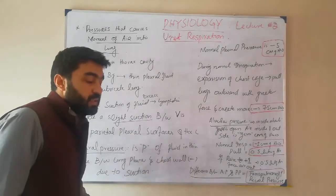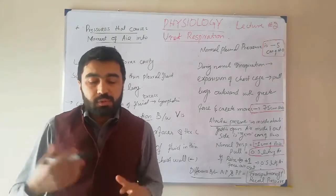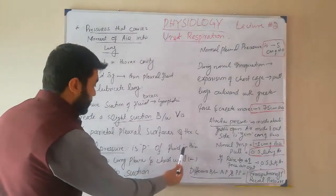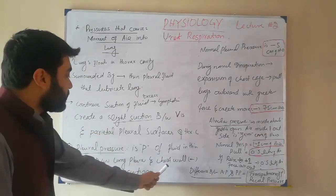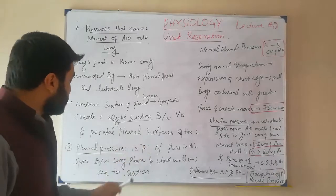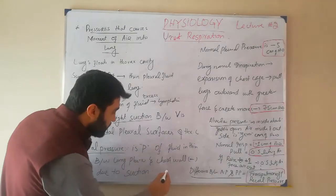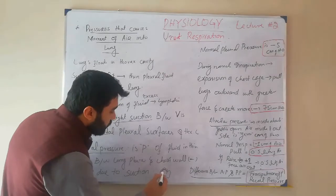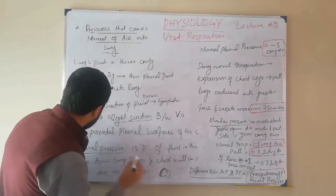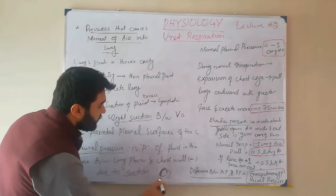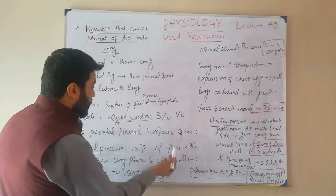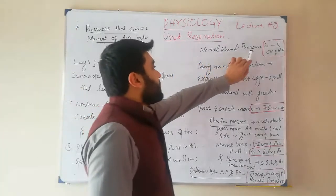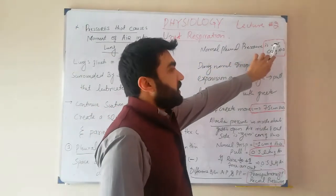Now let's come toward pleural pressure. How does pleural pressure develop? Pleura is a membrane which surrounds the lungs. Pleural pressure is the pressure of fluid in the thin space between the lung and the chest wall. This pressure is negative due to the suction. If I draw the lungs here — suppose these are the lungs and this is the parietal pleura, the chest wall — this pleural pressure is present here and it is a negative pressure due to suction of excess fluid by the lymphatic system. The normal value of pleural pressure is minus 5 cm of water.